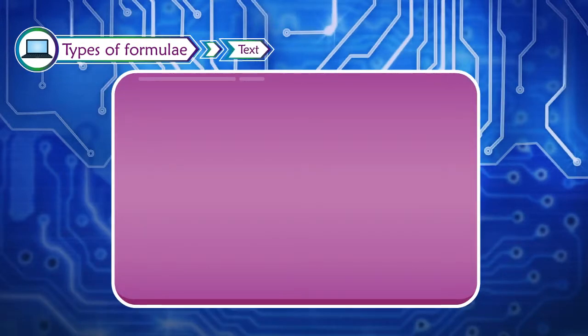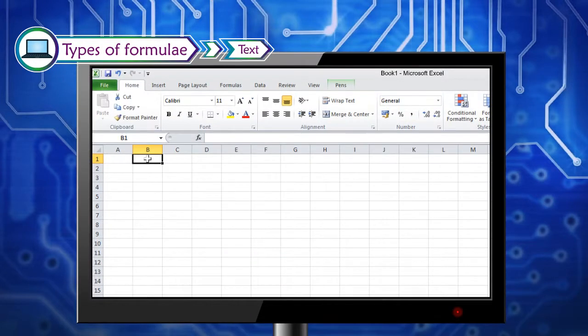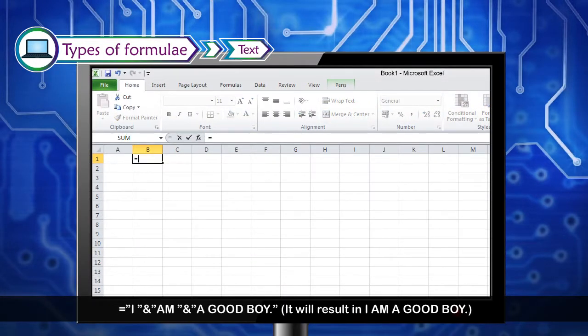Text formula used for joining two or more strings by using ampersand sign. Example: equals quote I ampersand quote am ampersand quote a good boy. It will result in I AM A GOOD BOY.